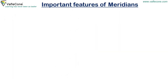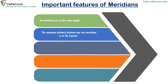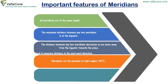Important features of meridians. All meridians are of the same length. The maximum distance between any two meridians is at the equator. The distance between any two meridians decreases as we move away from the equator towards the poles. Meridians cut the parallels at right angles. Meridians are used to measure distance in the east-west direction.